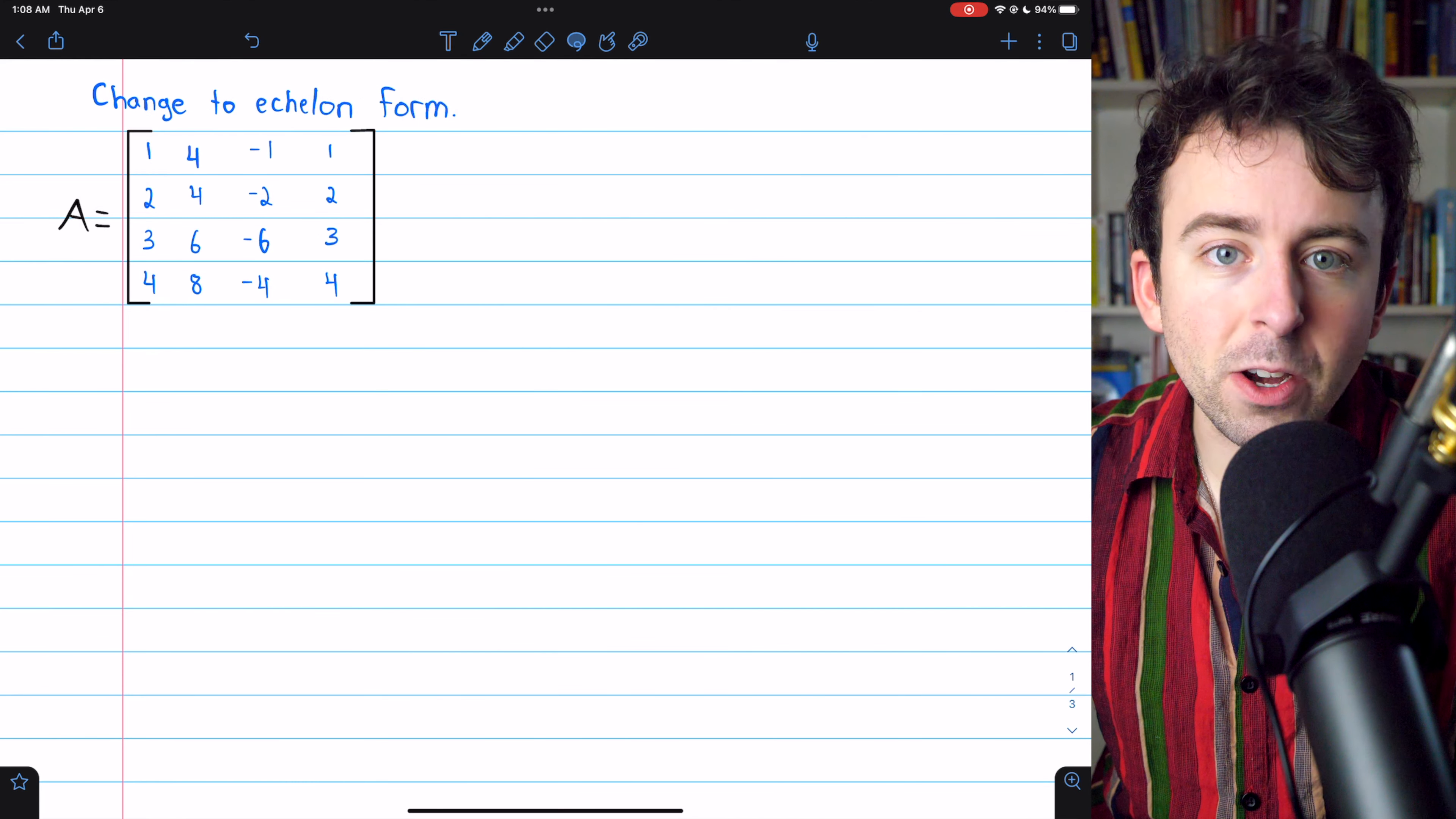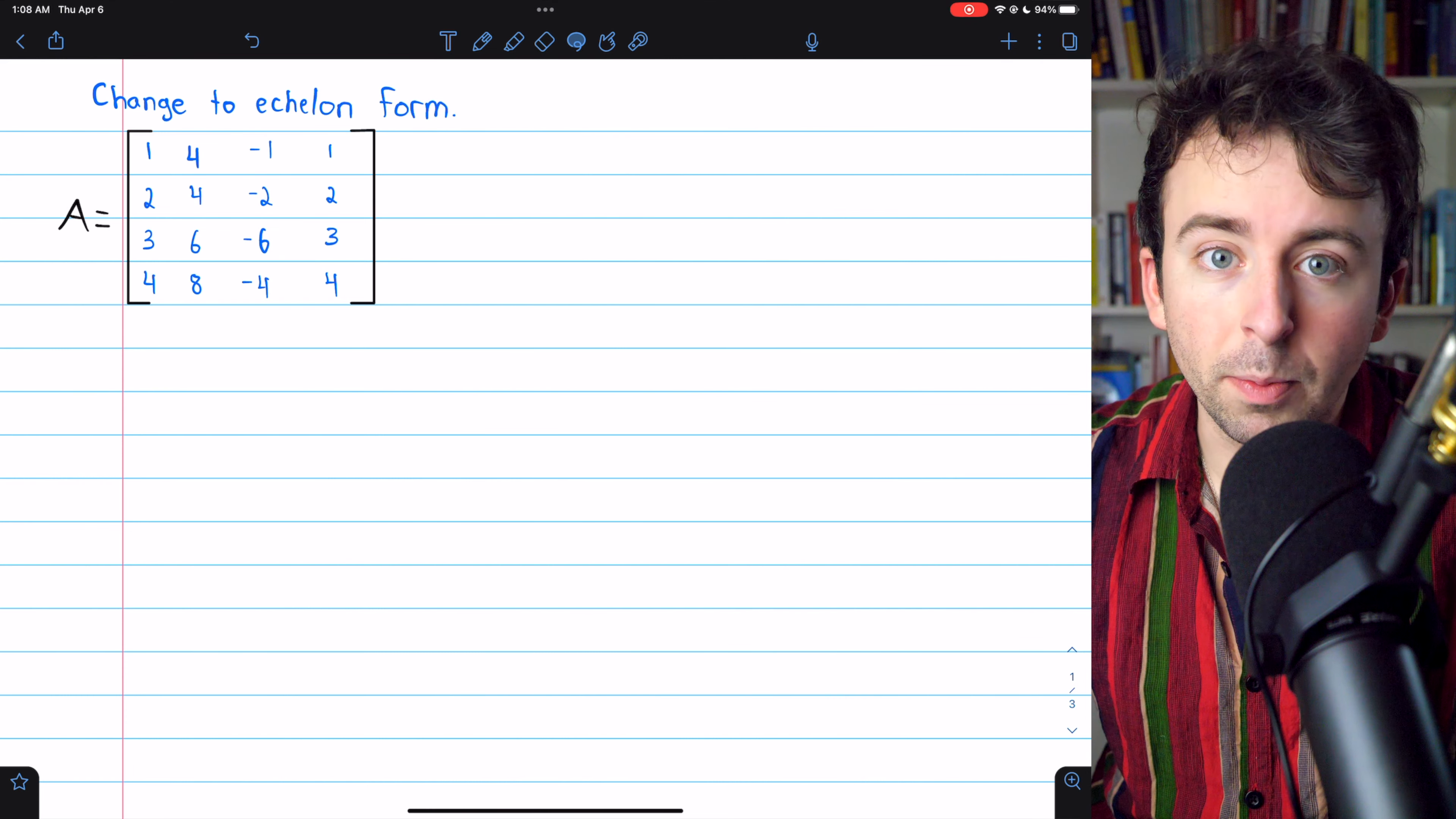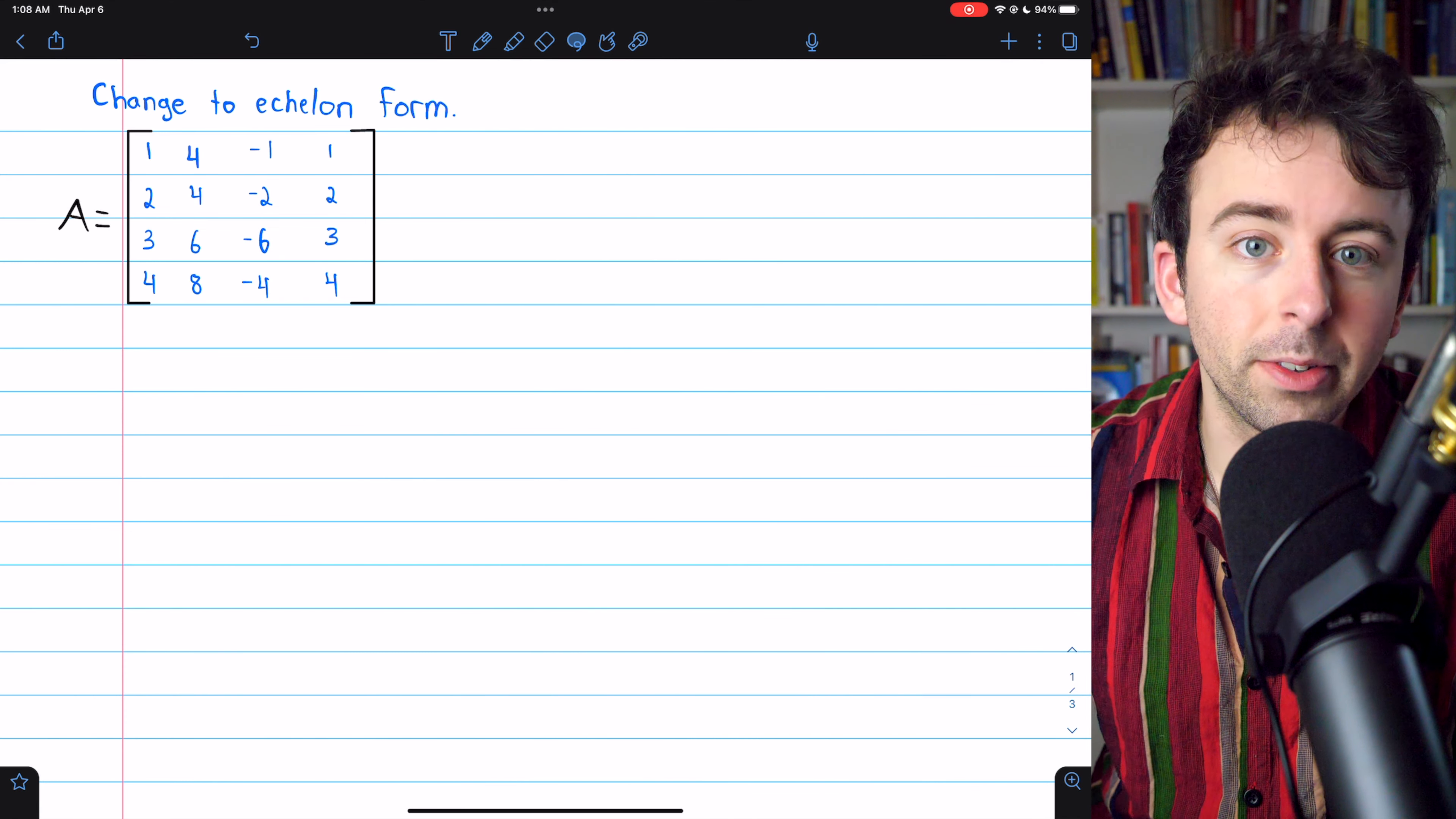Recall that the rank of a matrix is the dimension of its row space or column space. They are the same as far as their dimension goes.